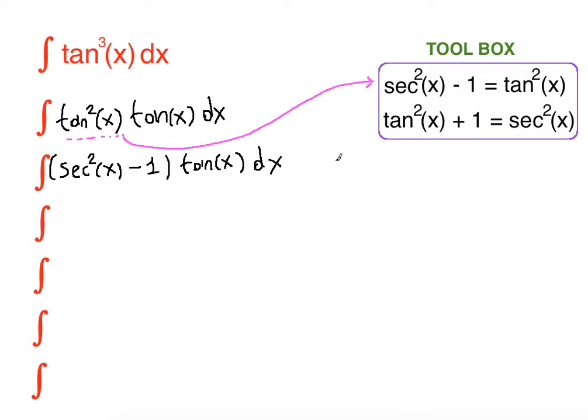u is our secant x. So what is du? What is the derivative of secant x? The derivative of secant x is secant x tangent x dx. If you solve for dx here you're going to get du over secant x times tangent x.